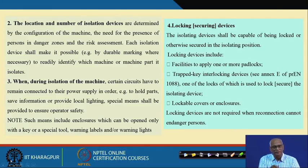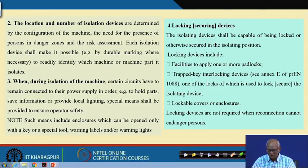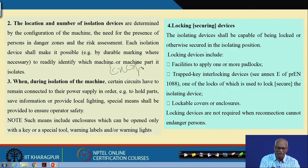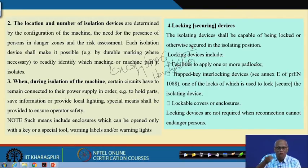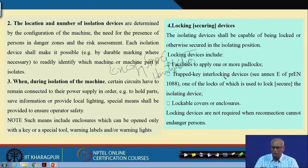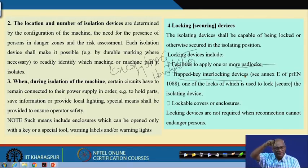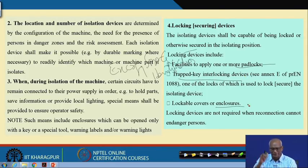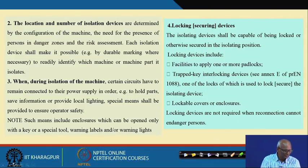You need to identify the location and number of isolation devices to be isolated — this is called energy source identification. Where to put the locks, when to put the locking devices — that is energy source identification. What are the locking devices? Pad locks, trapped keys, keys incorporated into the machine itself, lockable covers and enclosures — these are all various devices for the locking system.